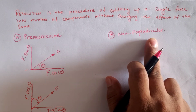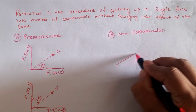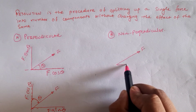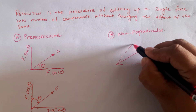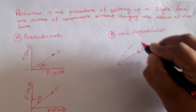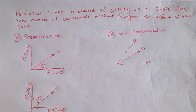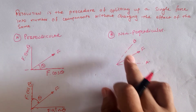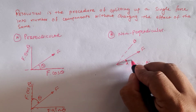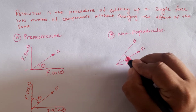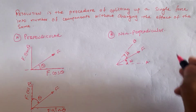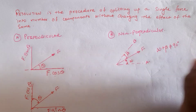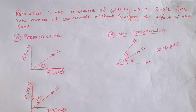The second type is non-perpendicular resolution, in which we have a single force that must be resolved along two axes — the first axis is A and the second axis is B. The direction of the force with these two axes is assumed as alpha and beta, where alpha plus beta must not equal 90 degrees.